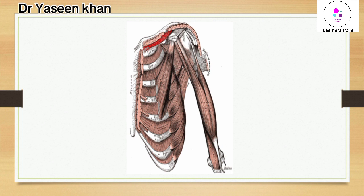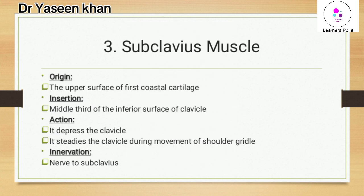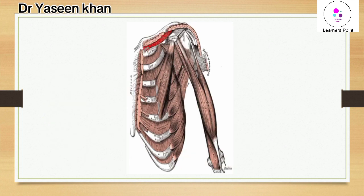The insertion is on the inferior surface of the clavicle. If we divide the clavicle into thirds — medial, middle, and lateral — the subclavius originates from the upper surface of the first costal cartilage and inserts into the inferior surface of the middle third of the clavicle.